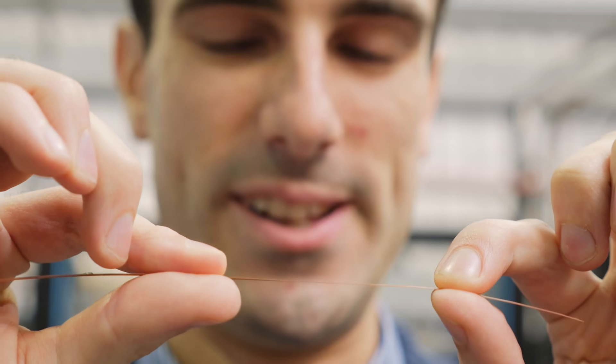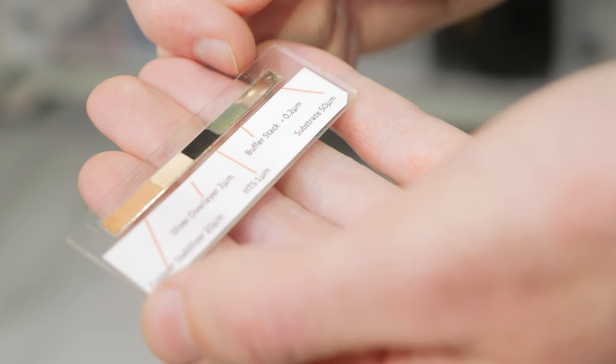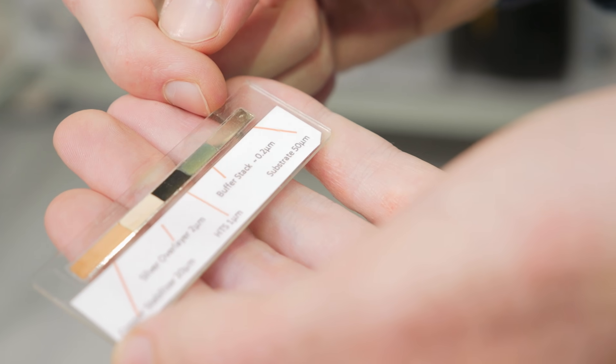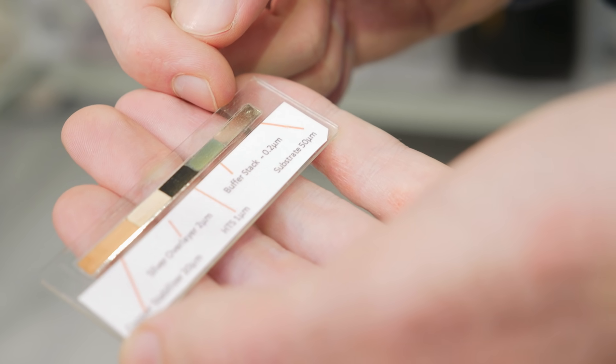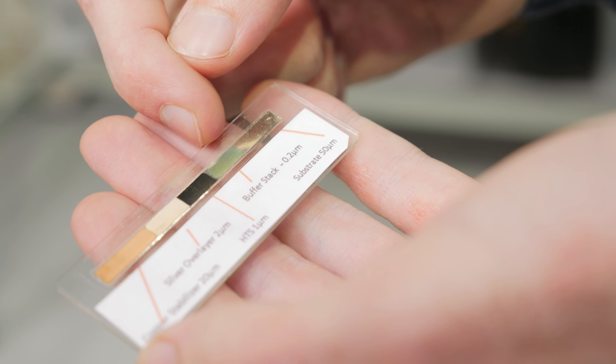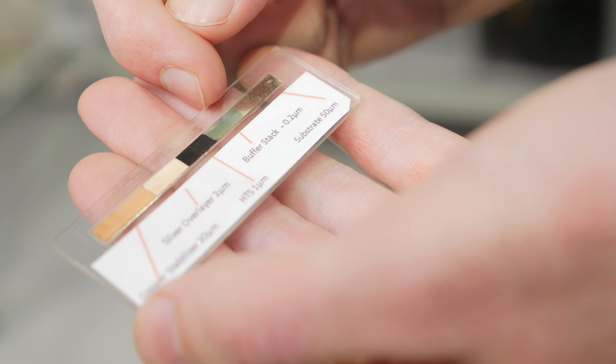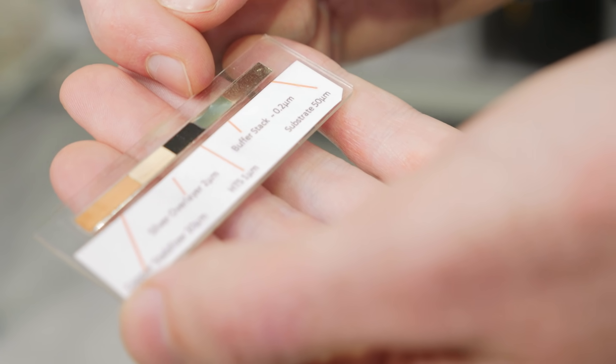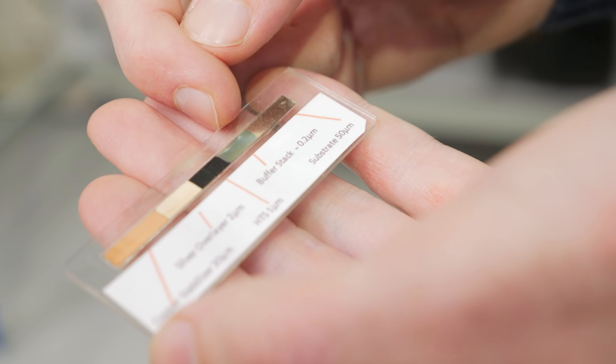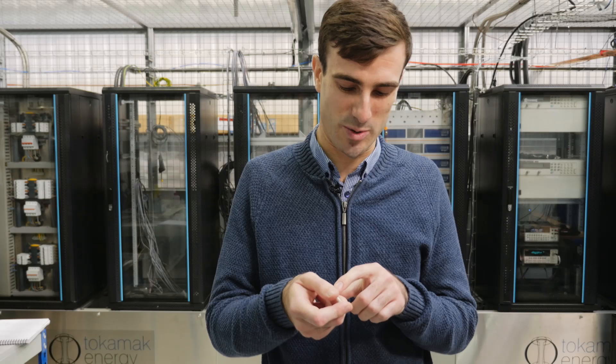The tape is composed of multiple layers. The vast majority of the tape is metals that don't carry any current at all. So half of the tape is a substrate material called Hastelloy, which is basically like stainless steel. That's 50 microns thick and just gives a mechanical backbone to the tape. On top of that you have a stack called a buffer stack that gives a template on which the superconductor grows.